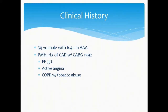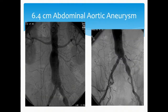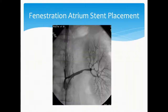We'll start with a couple of cases. This was a 59-year-old male who presented with a 6.4-centimeter aneurysm. He has a history of coronary disease, reduced EF, COPD, and tobacco abuse. It was found incidentally on an assessment for back pain. CT suggested that there was inadequate neck for EVAR, and he underwent angiographic evaluation and IVUS. You can see there's really a very short neck between the left renal artery and an inadequate neck for the conventional devices at the time.